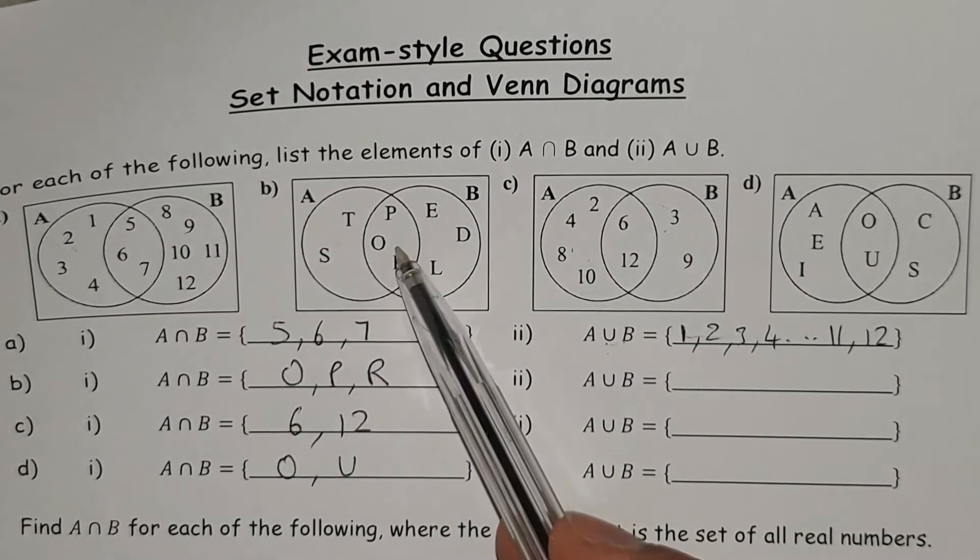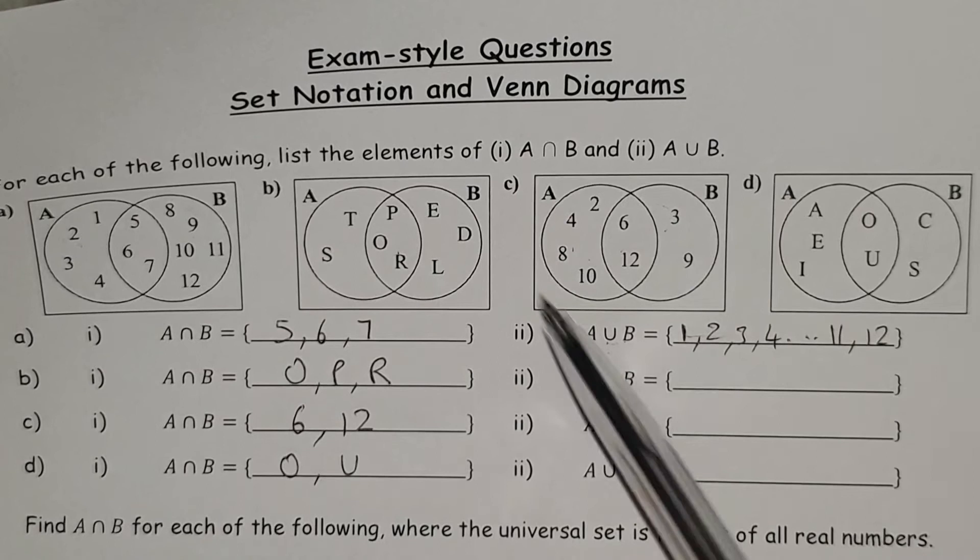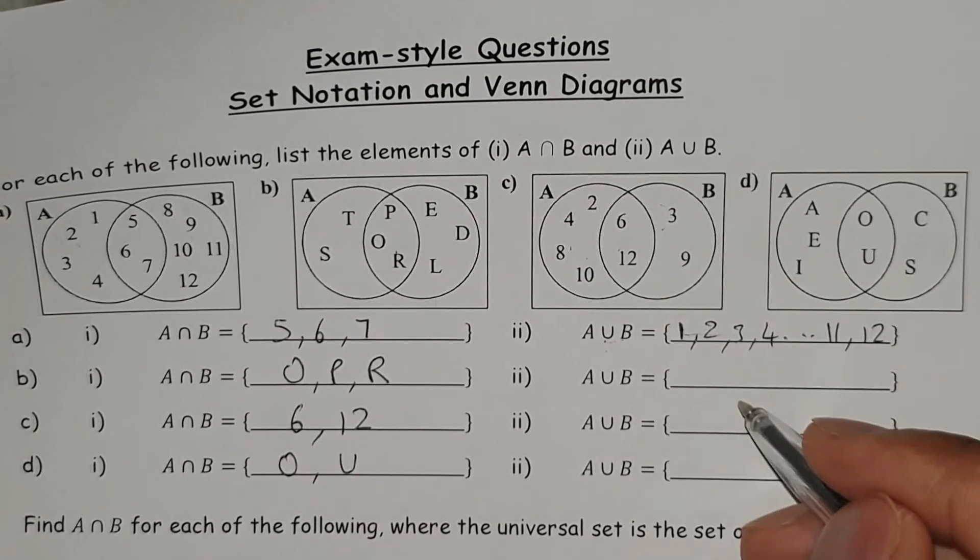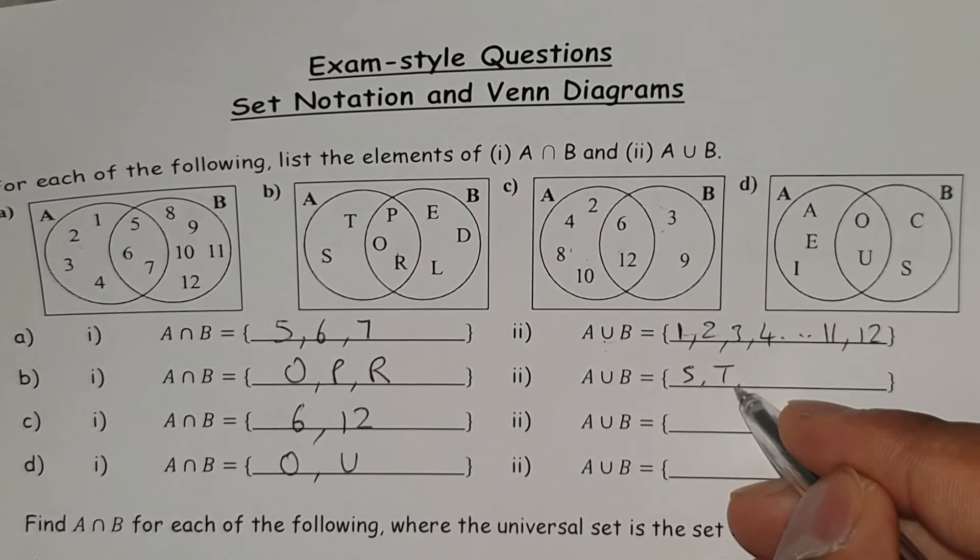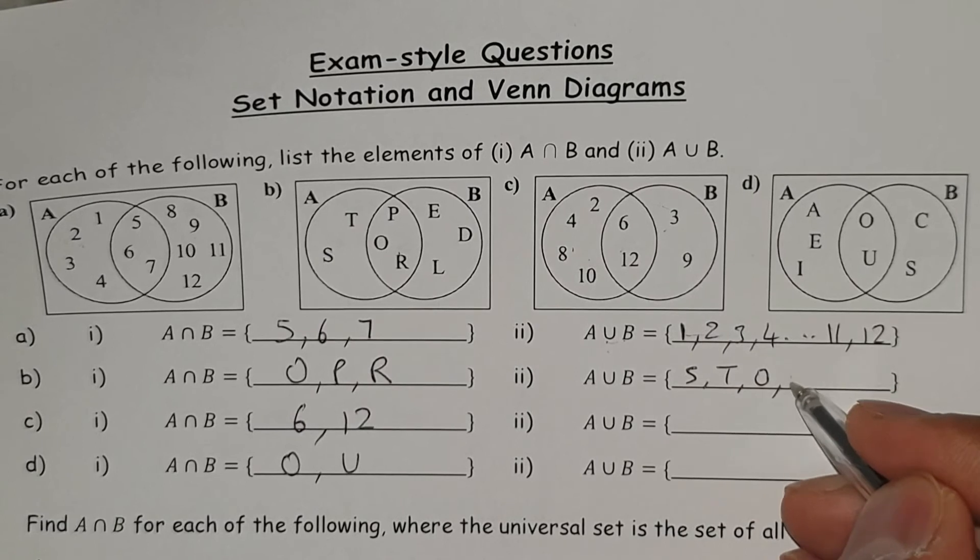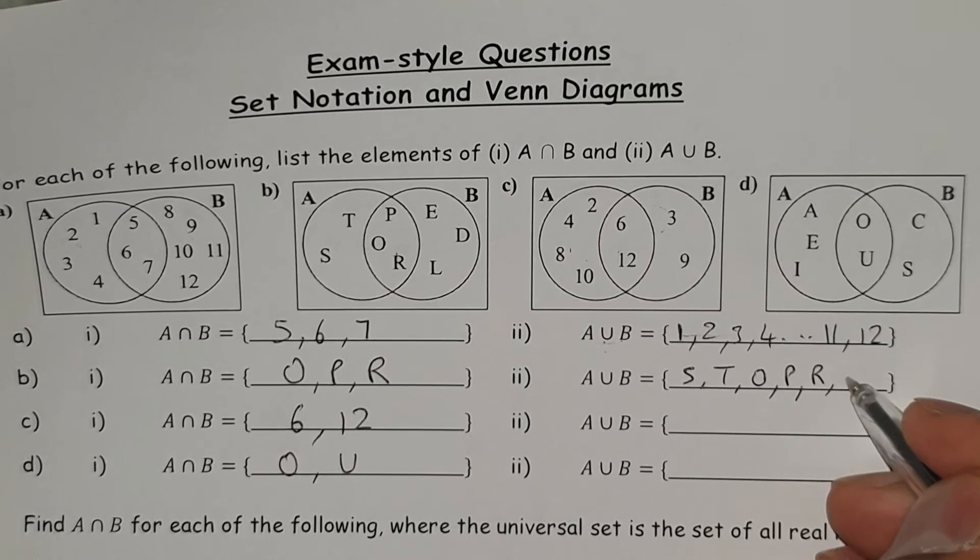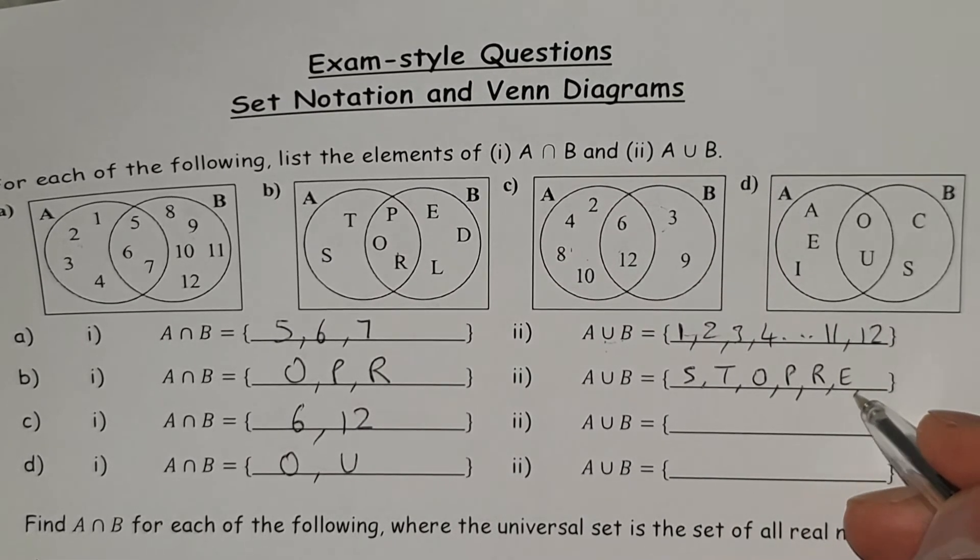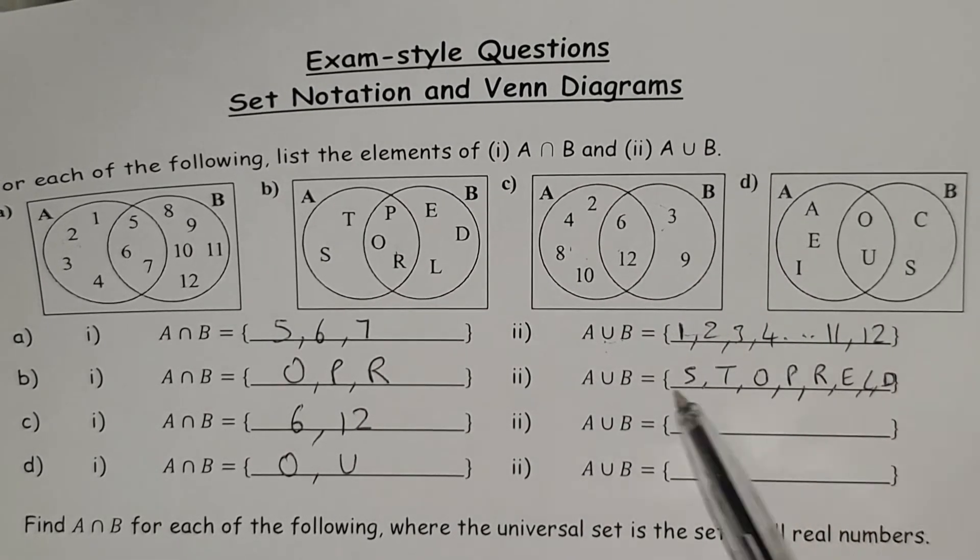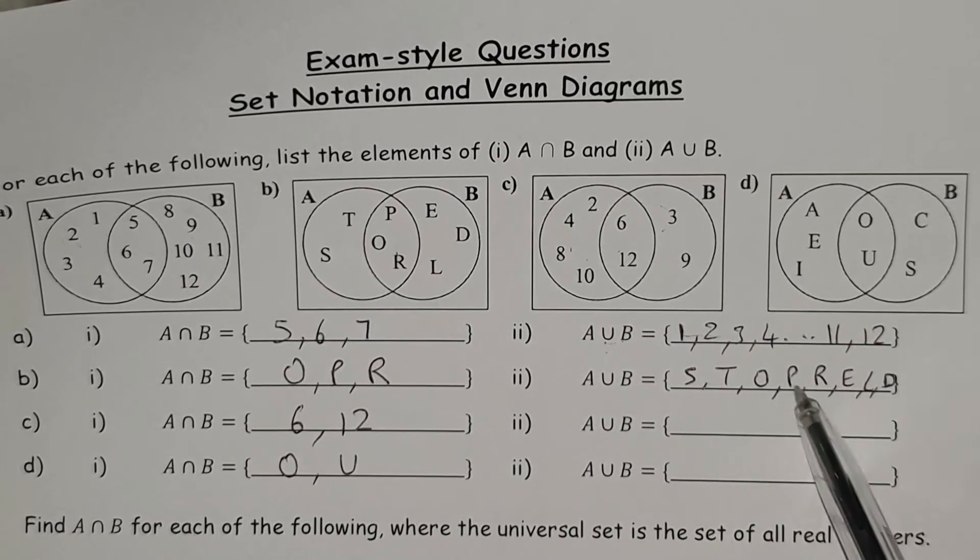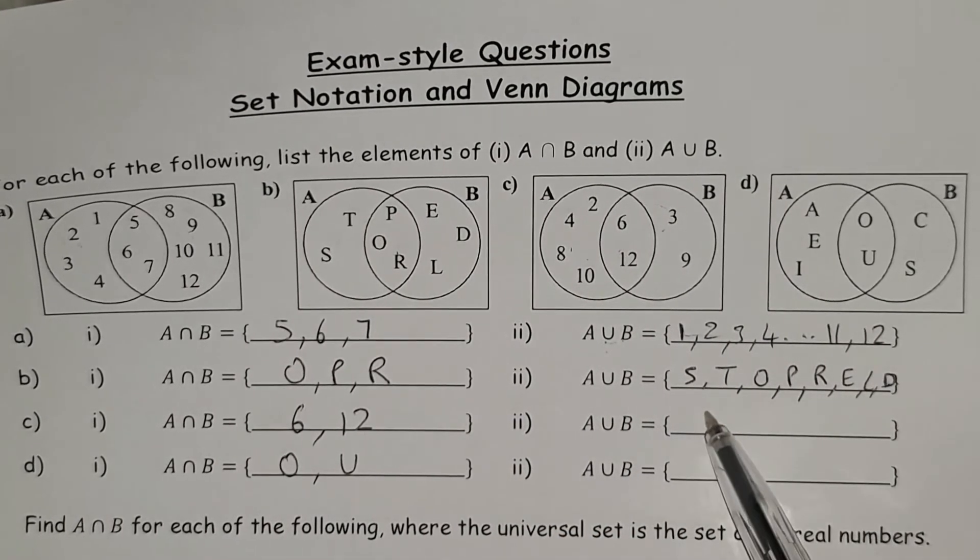The same would apply for question B, C and D. So this one would be S, T, O, P, R, E, L and D. They don't really have to be in alphabetical order so long as you've got them all there.